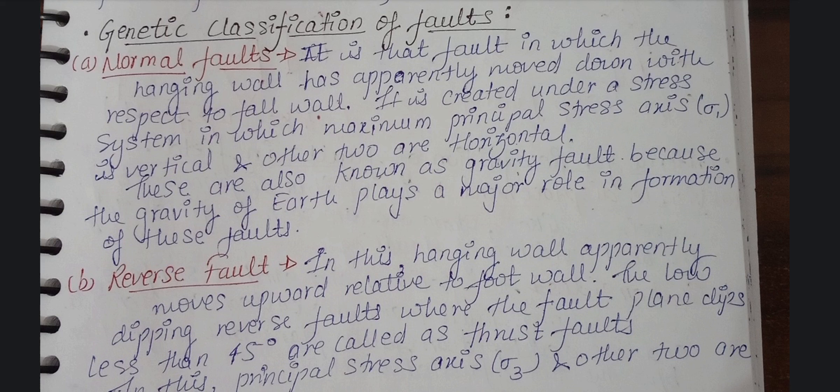Normal fault means it acts exactly normal to the fault surface, or you can say on the rock surface. This is created by the maximum principal stress sigma 1 being vertical, and the other two — sigma 2 and sigma 3 — are horizontal.